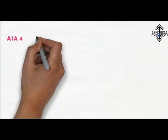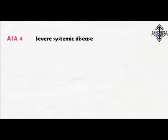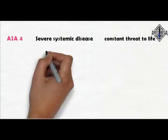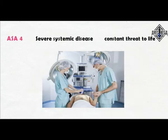ASA 4 — Patient with severe systemic disease that is a constant threat to life. Examples include: recent (within 3 months) MI, ongoing cardiac ischemia or severe valve dysfunction, severely reduced ejection fraction, sepsis, DIC, ARDS, or ESRD not going for regularly scheduled dialysis.